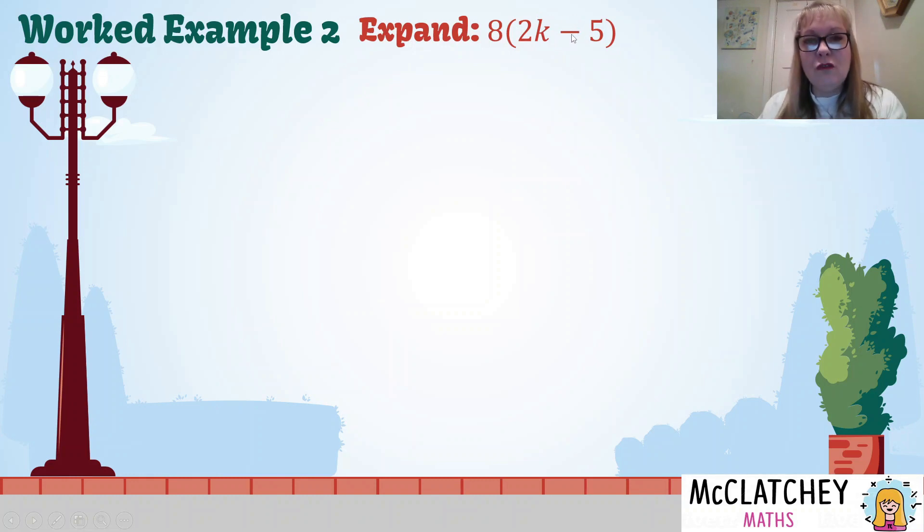Positive times positive makes positive. Negative times negative makes positive. Negative and a positive, when they're opposite signs together we get a negative. So in this case we've got positive 8 times positive 2k gives us 16k. Positive 8 times negative 5 gives us minus 40.